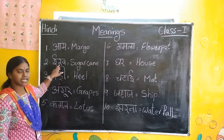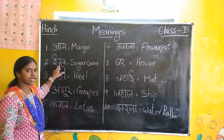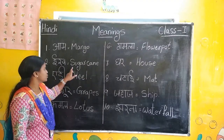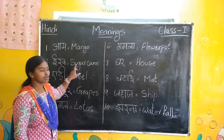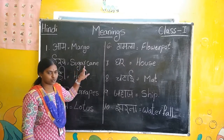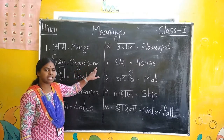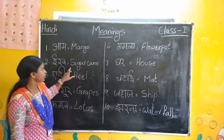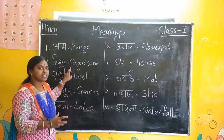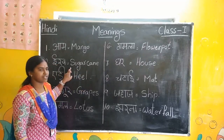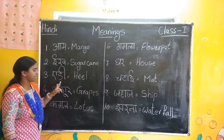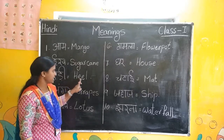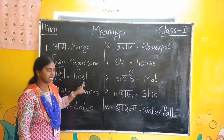Eek — Eek means sugar cane. Sugar cane you have to write here: S-U-G-A-R, sugar. C-A-N-E, cane. Sugar cane. You have to read the word and you have to write, children. A-D — A-D means heel. H-E-E-L, heel.